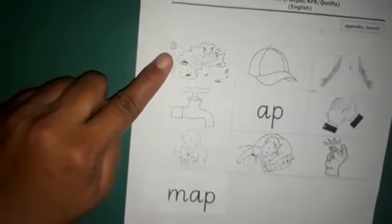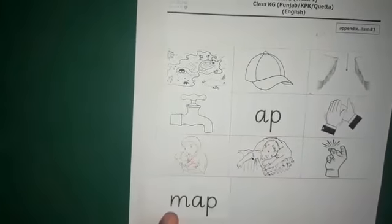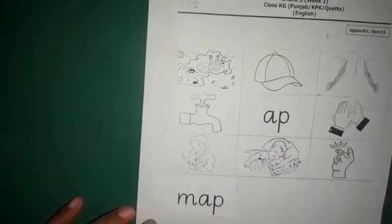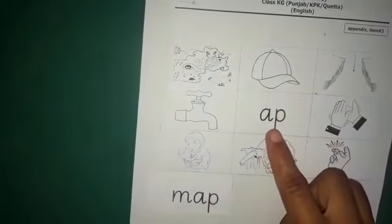What is the initial sound of map? Map. And what is the sound we take at the end of map? A, P. M, A, P. It is the complete sound of map. Now we have another picture of cap and we complete the sound of cap.